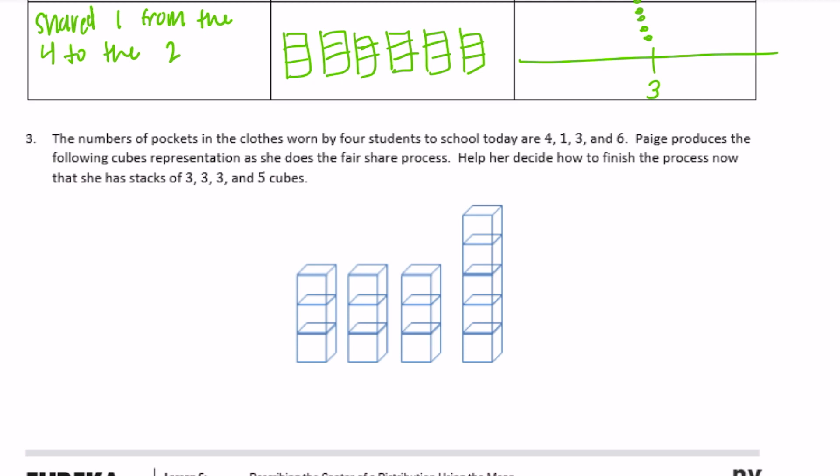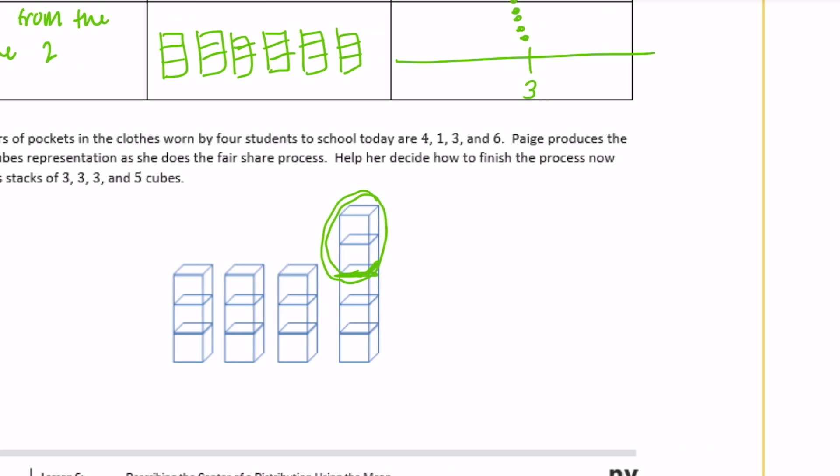Number three: the number of pockets in the clothes worn by four students were four, one, three, and six. Page produces the following cubes representation as she does the fair share process. Help her decide how to finish the process now that she has stacks of three, three, three, and five cubes.